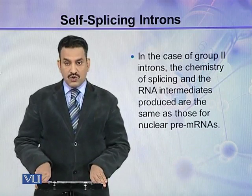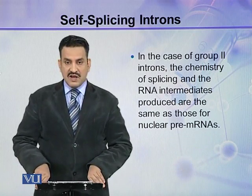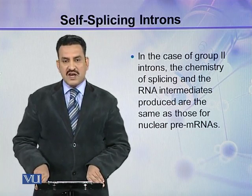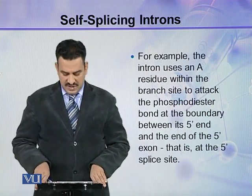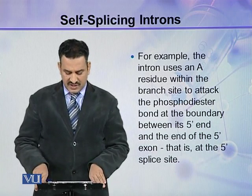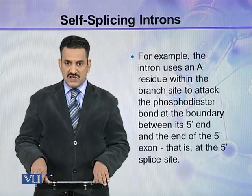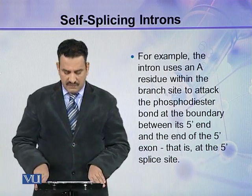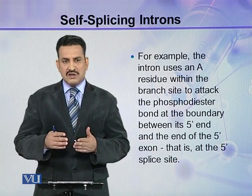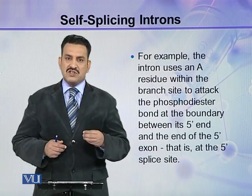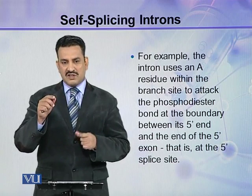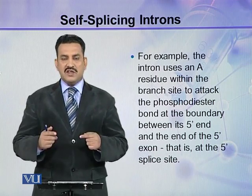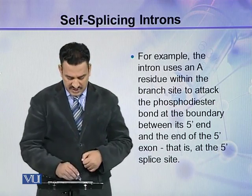In the case of group 2 introns, the chemistry of splicing and RNA intermediates produced are the same as those produced in the case of nuclear pre-mRNAs. For example, the intron uses an A residue within the branch site to attack the phosphodiester bond at the boundary between the 5' end and the 5' exon — that is, at the 5' splice site — just as seen in spliceosome-mediated splicing.